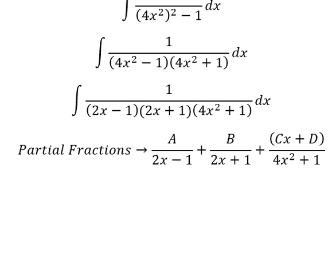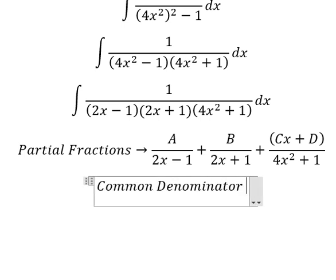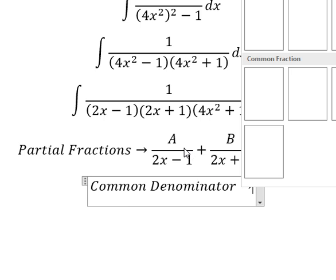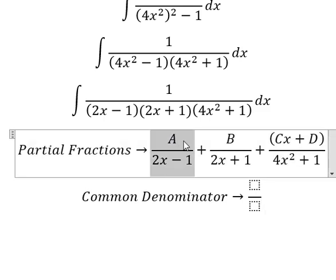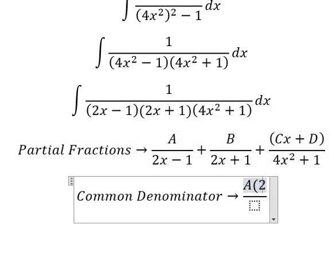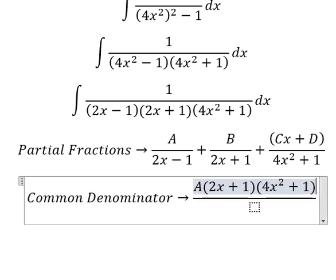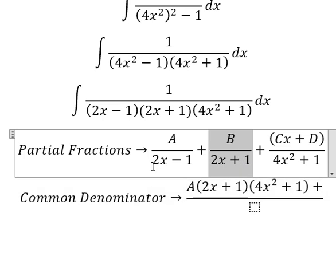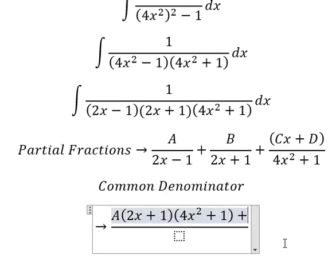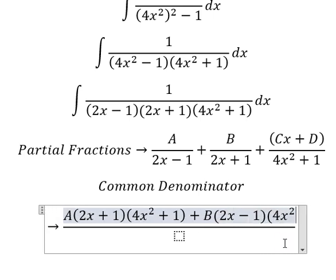Now we can do common denominator. For this term, it is missing 2x plus 1 and 4x squared plus 1, so capital A is multiplied by 2x plus 1 and 4x squared plus 1. For the B term, it is missing 2x minus 1 and 4x squared plus 1, so capital B is multiplied by 2x minus 1 and 4x squared plus 1.